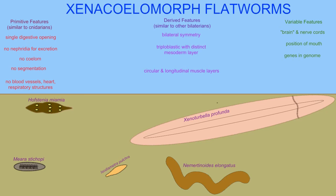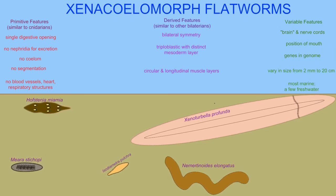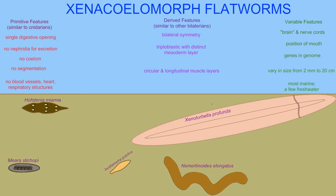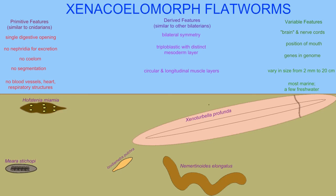The genes present in their genome can vary, and so trying to reconstruct the genome of the earliest bilaterians is difficult. Therefore, these flatworms are important because their basal position among bilaterians gives insight into what the first bilaterians may have looked like.